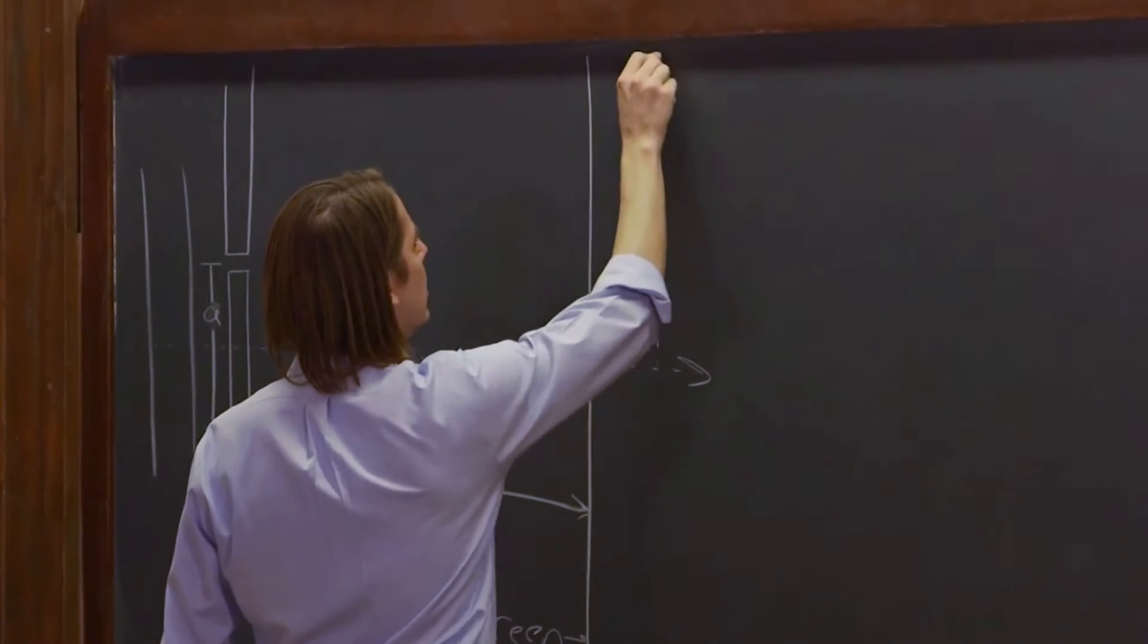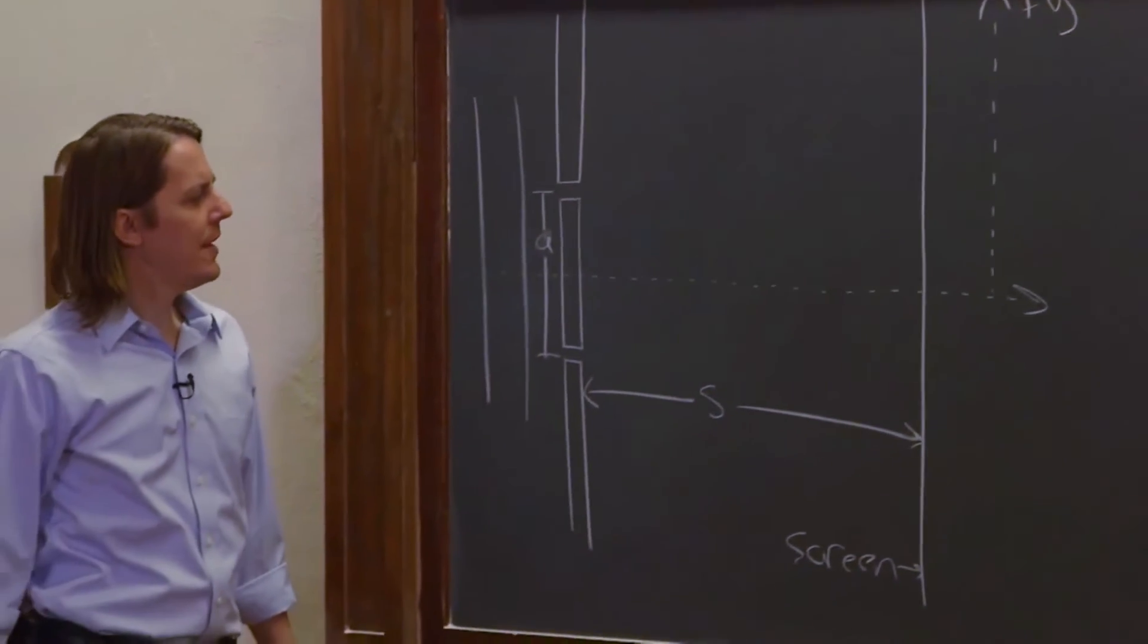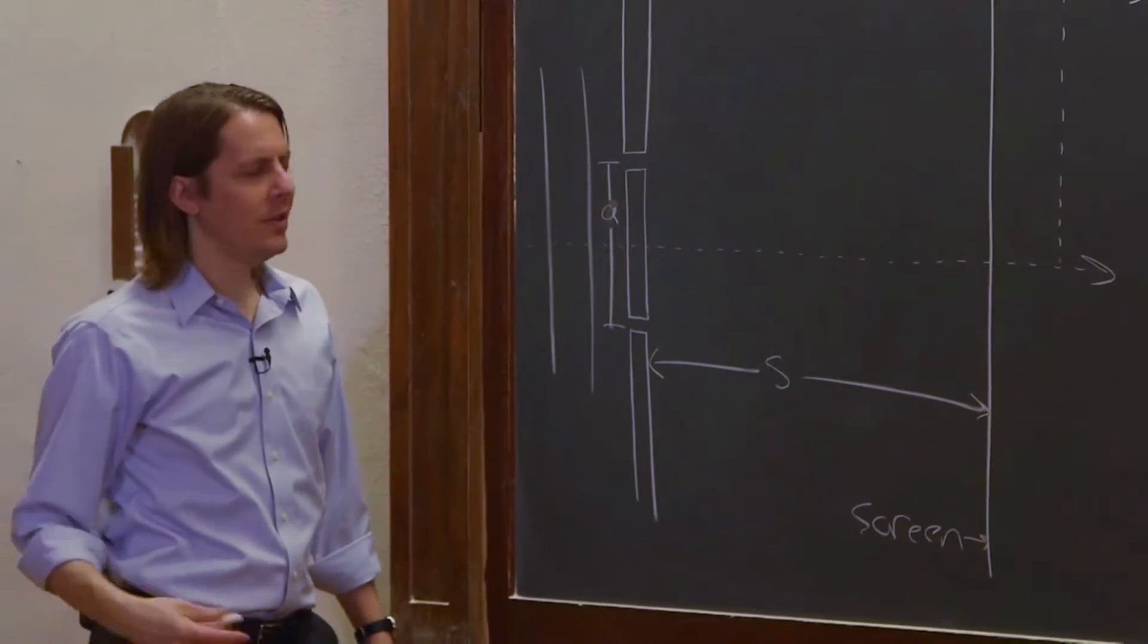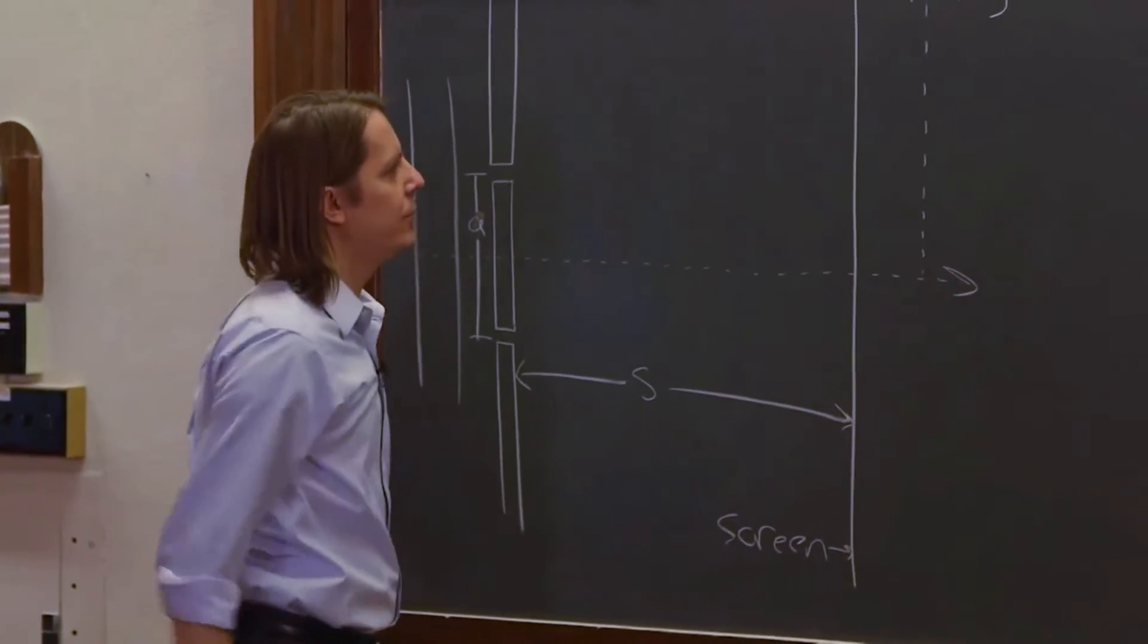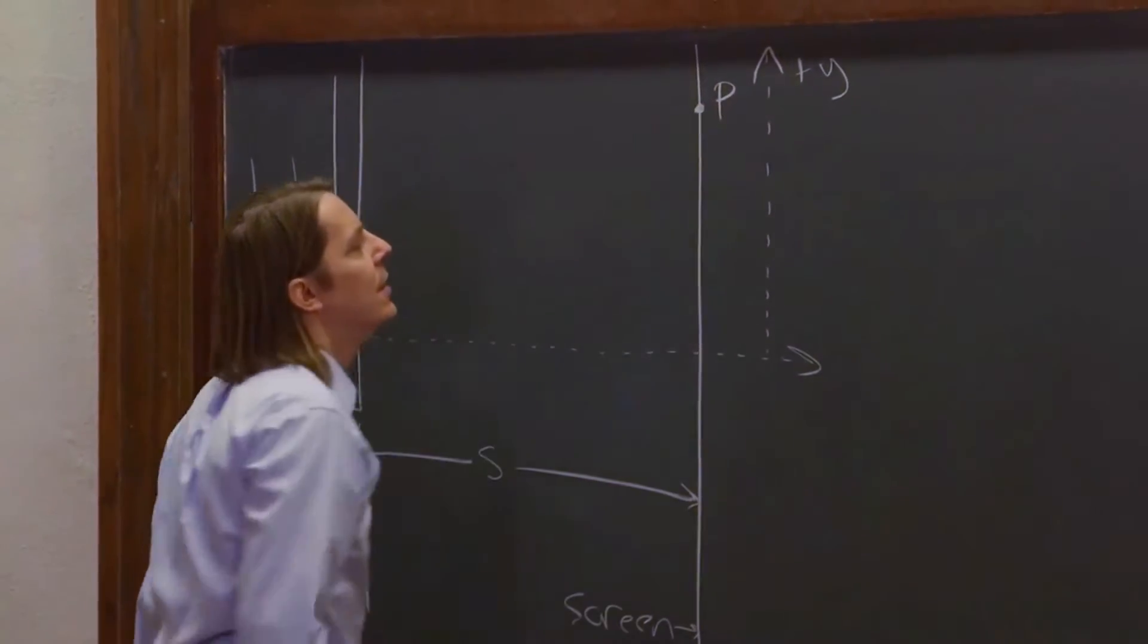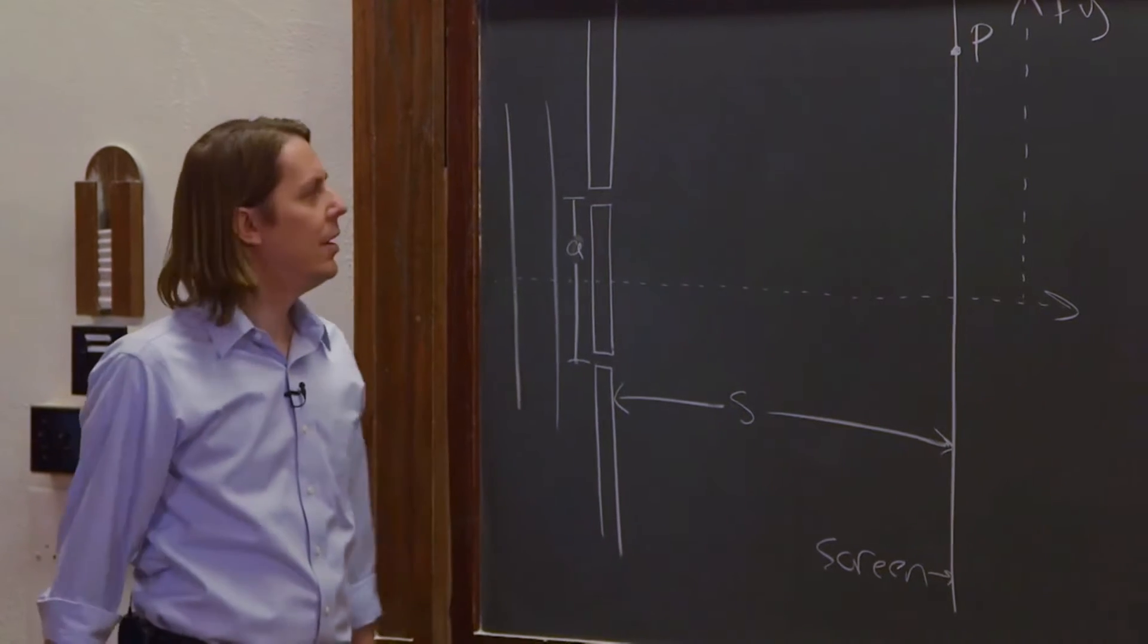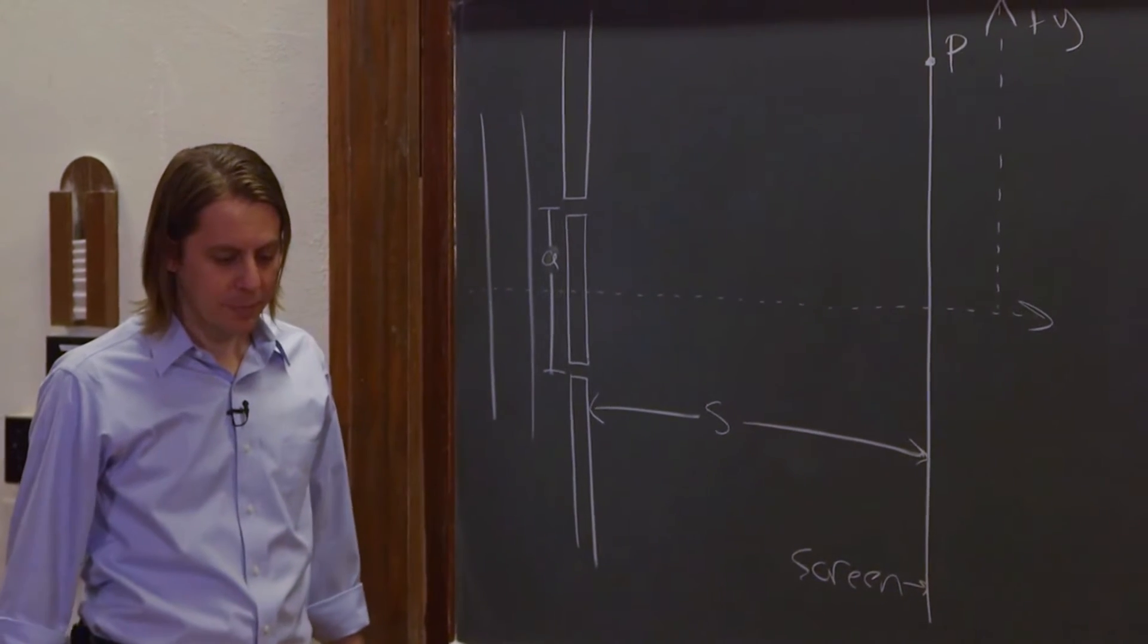that's the Y axis. So if we come up here, plus Y, and the question is what is the intensity pattern on this screen? And we figure that out by just picking a point P, and figuring out how much light ends up at P. What's the irradiance at point P?